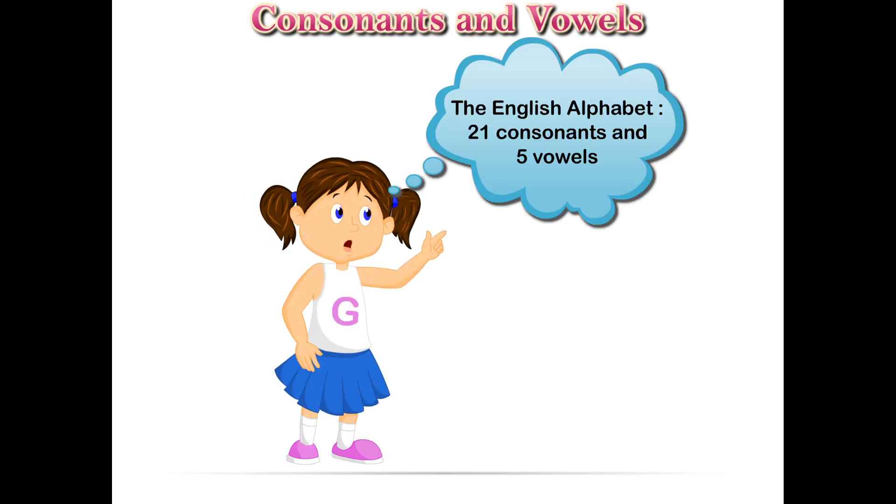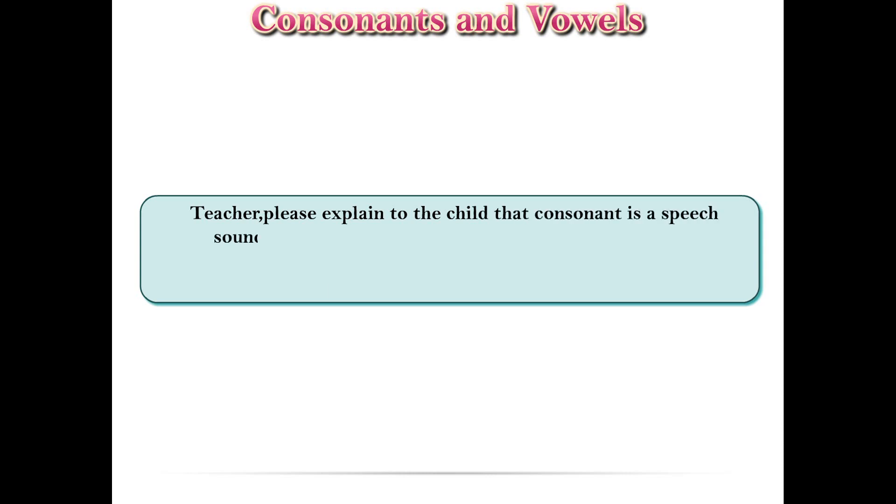Consonants and vowels. The English alphabet has 21 consonants and 5 vowels. Teacher, please explain to the child that a consonant is a speech sound that is produced by completely or partially stopping the air being breathed out through the mouth. Examples: R, S, T, V, etc.